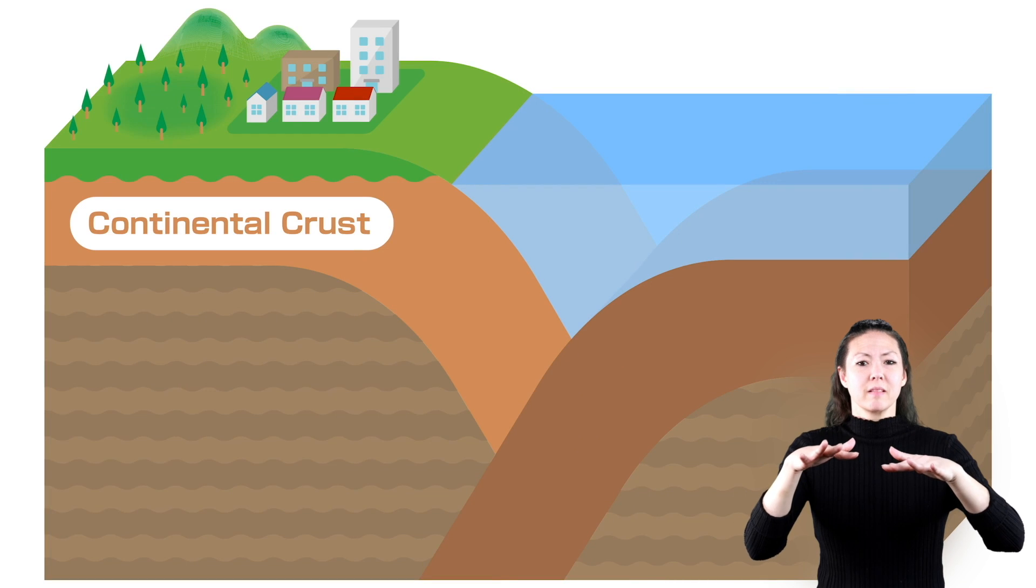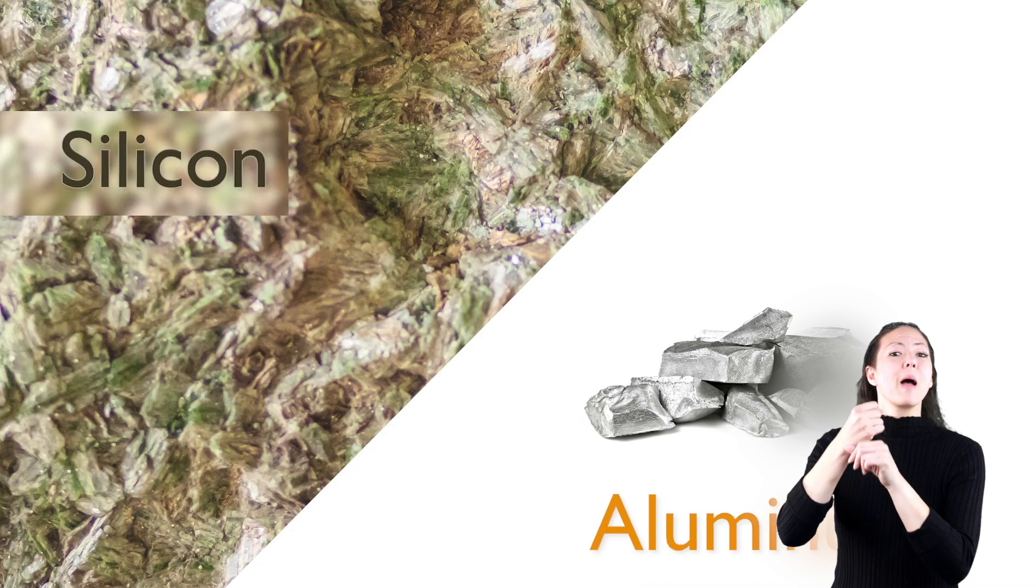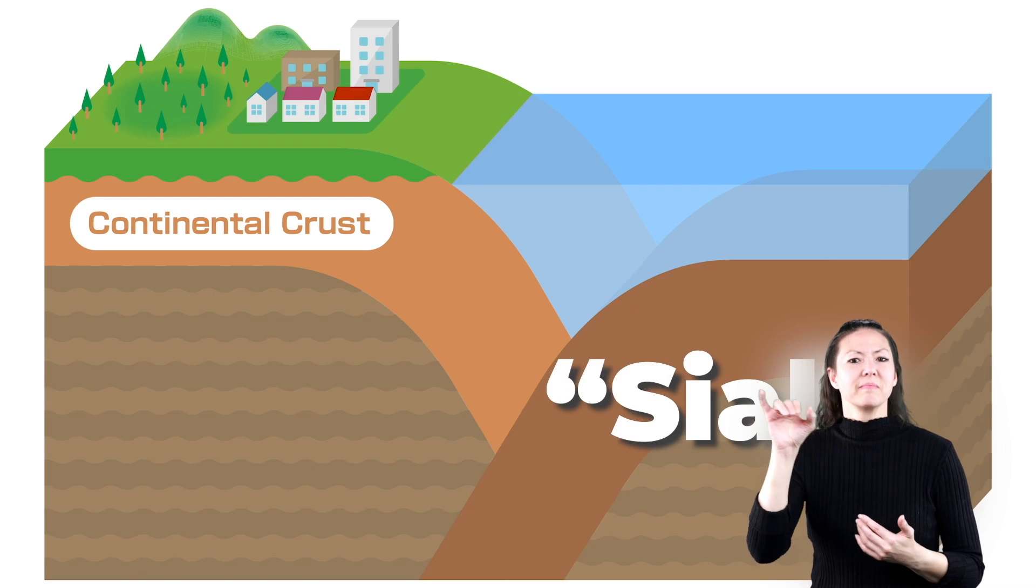Continental plates exist mainly below land and they're made up of silicon and aluminum, and are therefore known as SIAL.